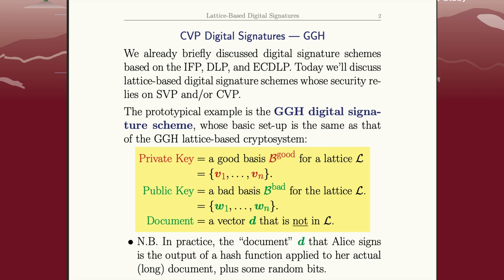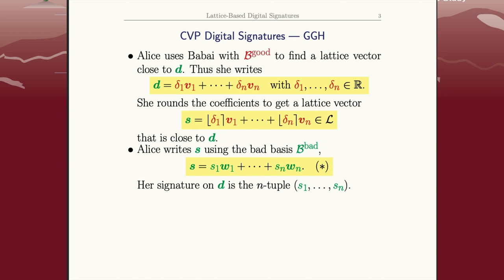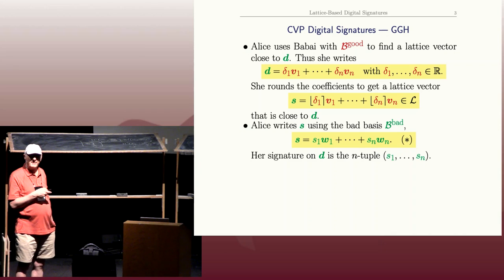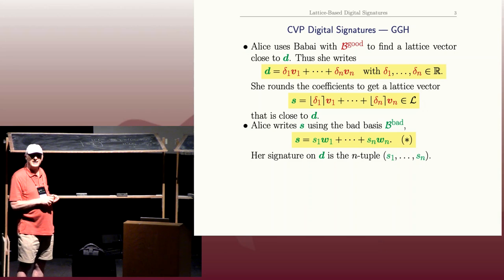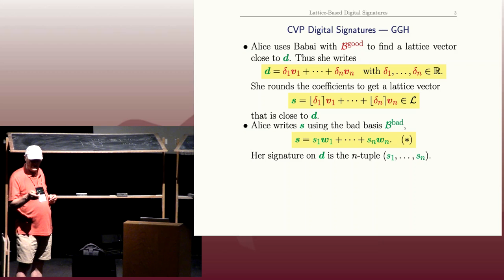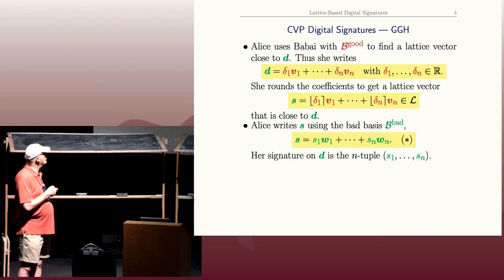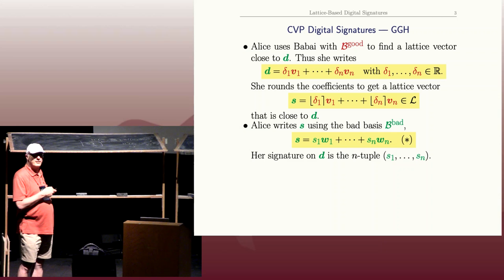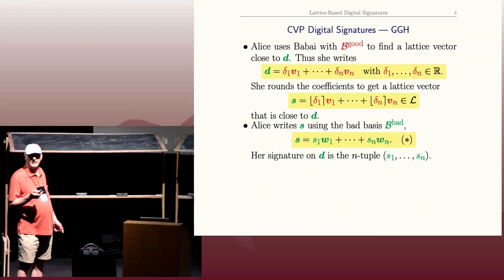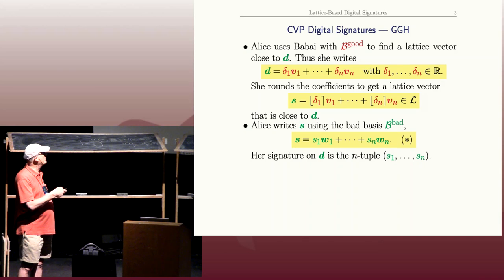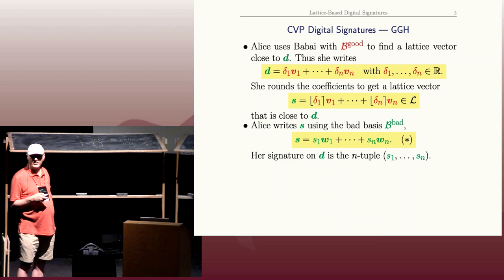So how does Alice sign this document? She has the good basis, and remember Babai's algorithm. She uses her good basis and Babai's algorithm does pretty well at finding a nearby lattice point to the target vector. She takes the target vector and writes it as a linear combination of her good basis using real or rational numbers.